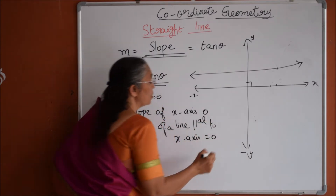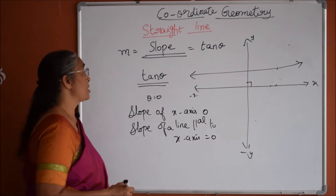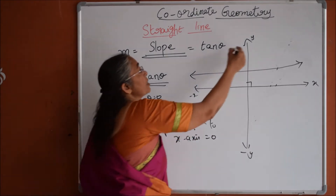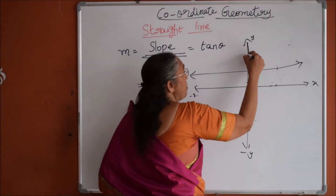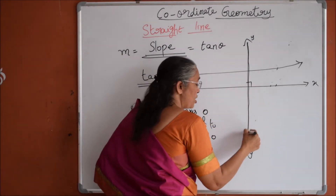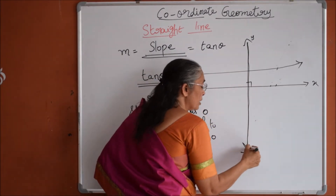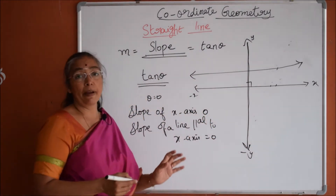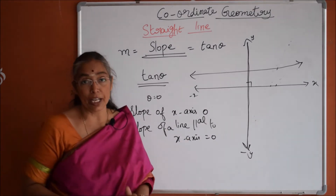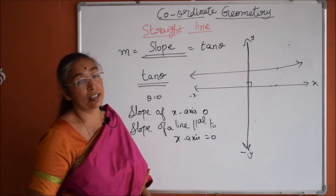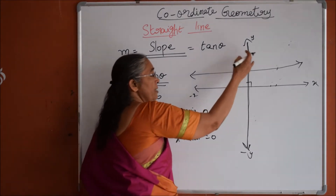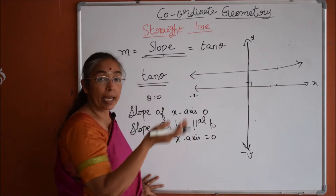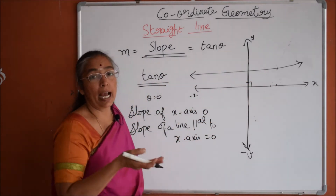Now similarly, what can be the slope of the y-axis or a line parallel to the y-axis? By definition, slope is the tan of the angle the line makes with the positive direction of the x-axis. The y-axis makes an angle of 90 degrees with the x-axis. So we need tan 90, which is undefined.